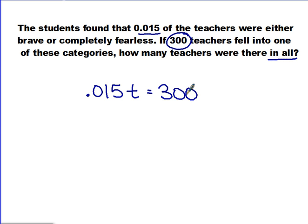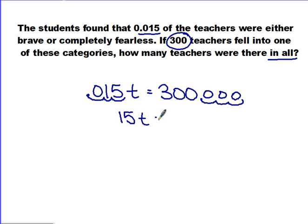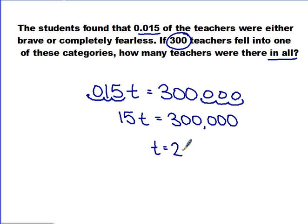We have a decimal number, so to get rid of it we move the decimal three places to the right for each term, filling empty spaces with zeros. Our new equation is 15T equals 300,000. To solve for T, we divide by 15, which gives us 20,000.